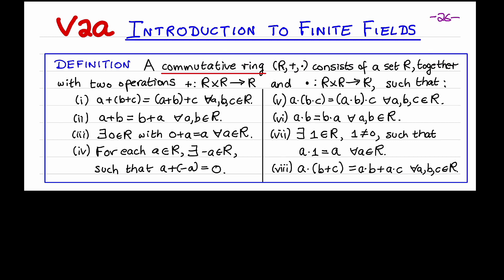The first is that addition is associative. Addition is also commutative. There exists an additive identity element called zero in the ring, such that zero plus a equals a for all ring elements a. Every ring element a has an additive inverse — for every element a in the ring, there exists an element which I'll call minus a in the ring, such that a plus minus a equals the additive identity.